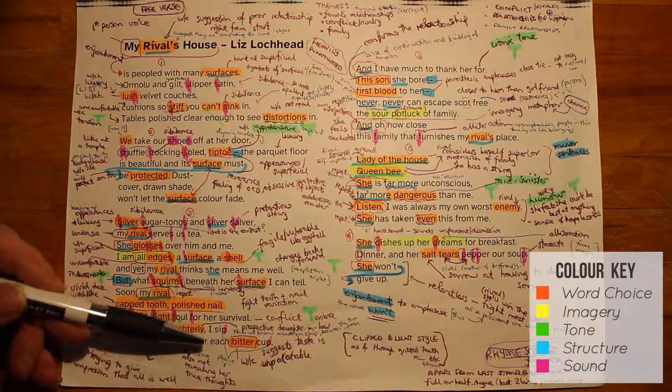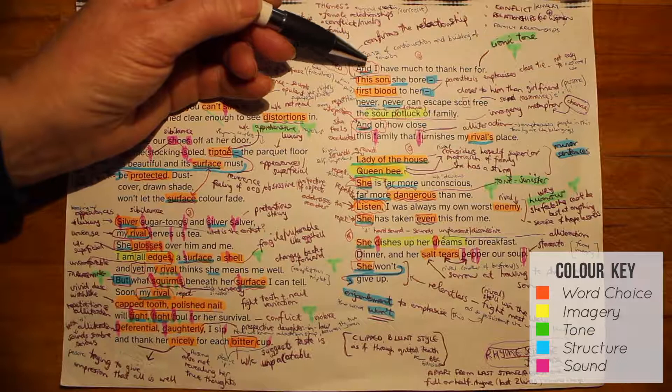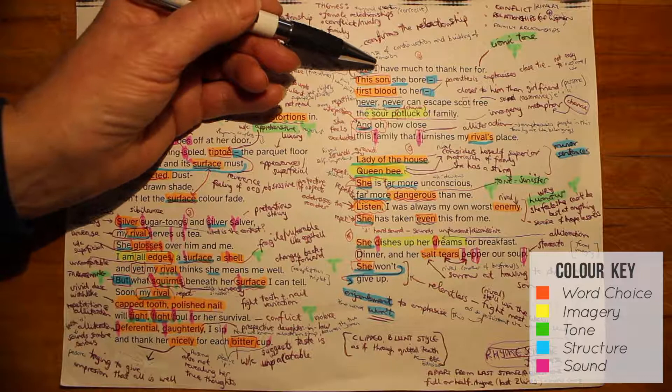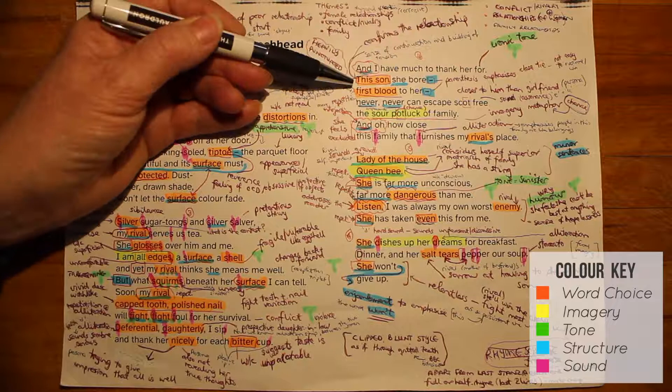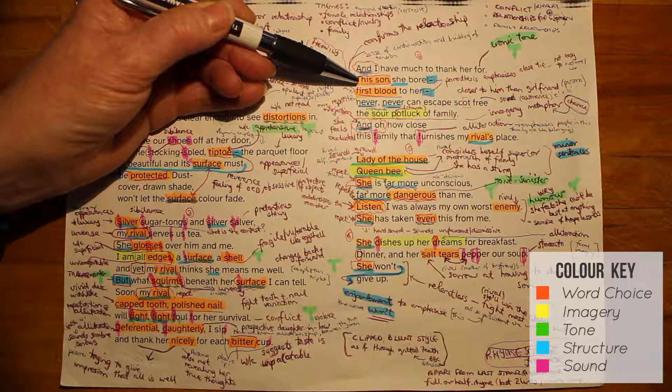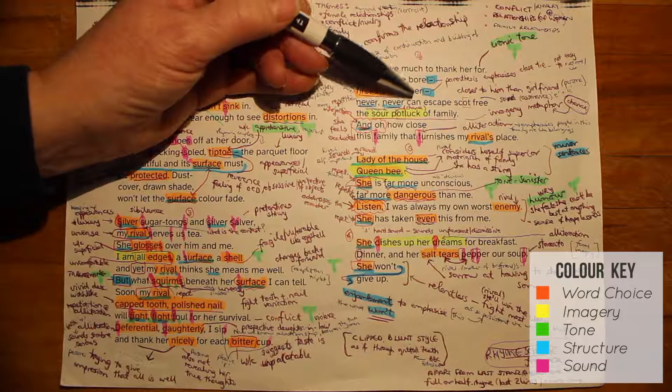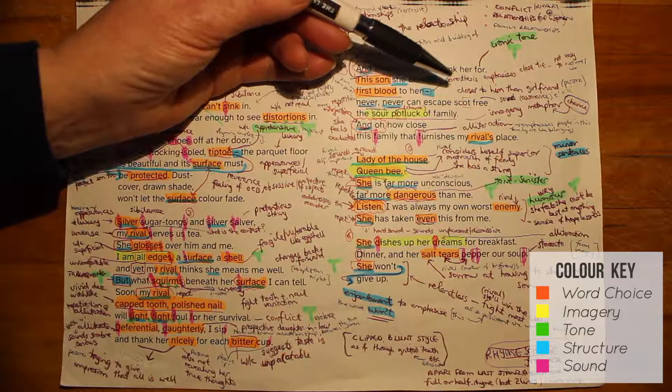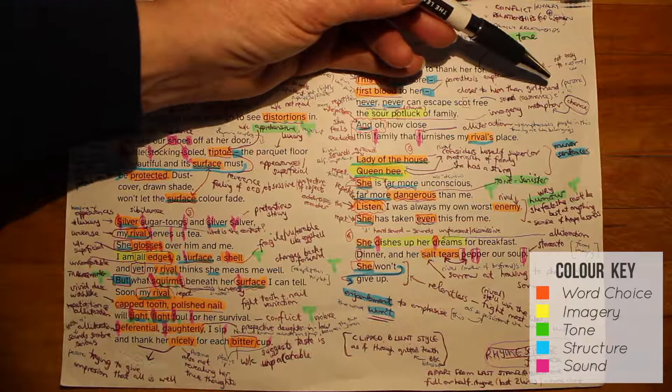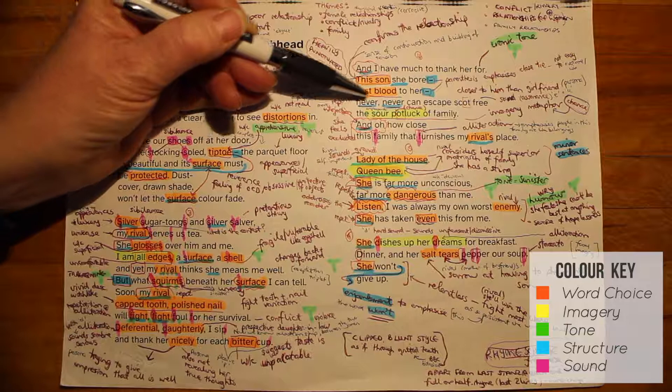Stanza four starts with the word and, conveying a sense of continuation and a building of tension. The persona says she has a lot to thank the hostess for, with a slightly ironic tone. And now we have confirmation of the actual relationship — the hostess's son is the boyfriend of the persona. The use of parenthesis emphasises how important this is, because he is first blood to her. In other words, the relationship between him and his mother is always going to be closer than between him and his girlfriend. There's also another meaning of first blood — to win the first point in a competition — which is quite interesting given the rivalry that is one of the themes of the poem.